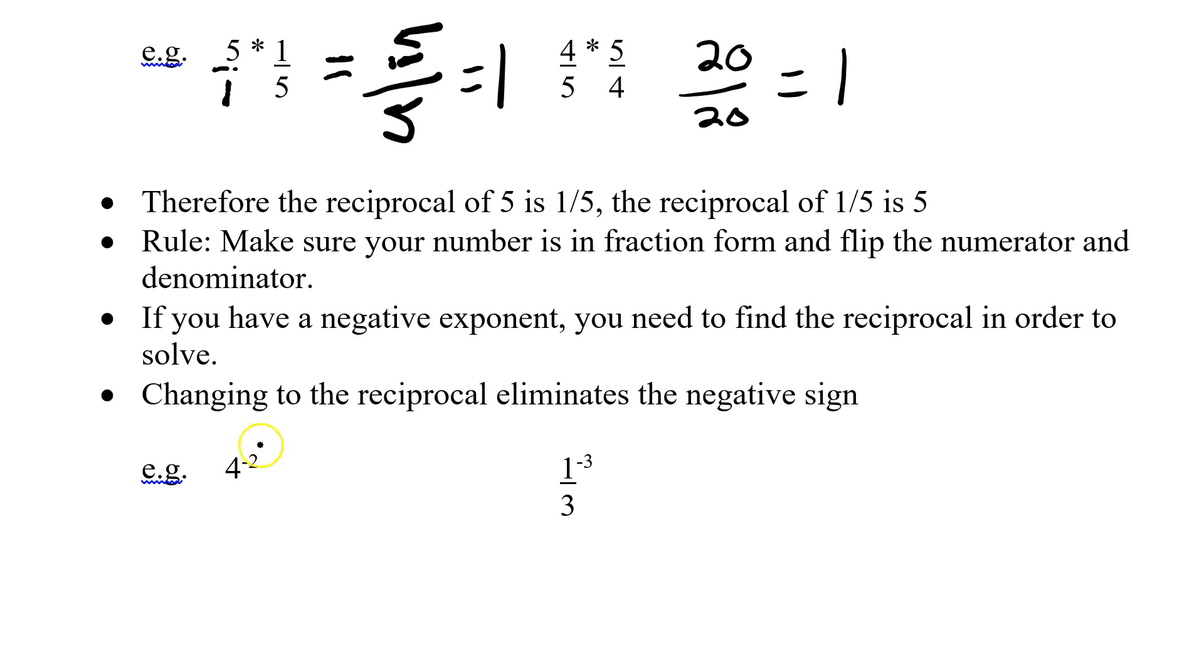So essentially what we're doing here is we've got 4 to the negative 2. Now, we can't do a negative 2 in exponent. It just doesn't work for us. We can only do positive exponents. So in order to get rid of the negative 2, we have to do the reciprocal.